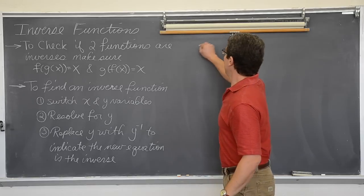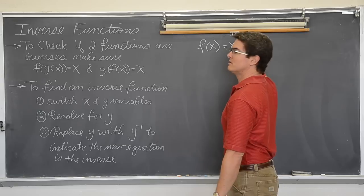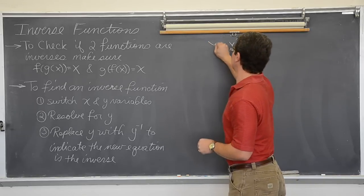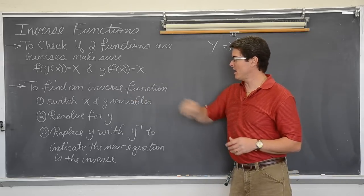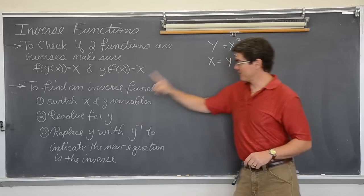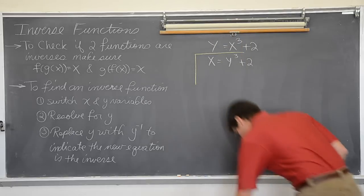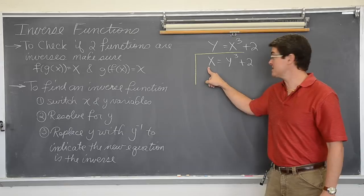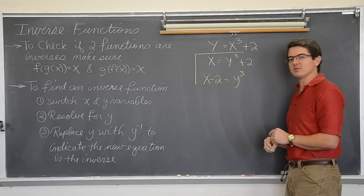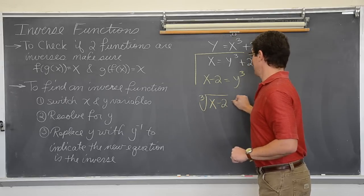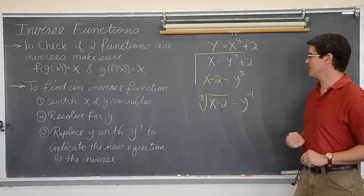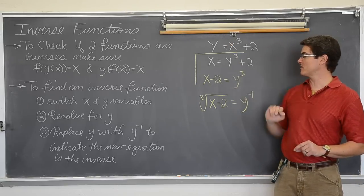Let's take a look at some actual problems. F of x is equal to x cubed plus 2. I want to find the inverse of this equation. And I am also going to drop the function notation for now. And I want to find the inverse. Take the x and y variables and switch them. So x equals y cubed plus 2. Now I want to resolve this for y. I am going to subtract 2 from both sides and get x minus 2 equals y cubed. And I need to finish solving for y. So I am going to take the cube root of both sides and get the cube root of x minus 2 equals y. I have switched my x and y's. I have solved for y. And now I am just going to make sure that I denote that this is an inverse function. So I have an original function and my inverse function.